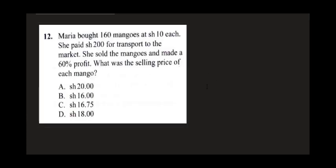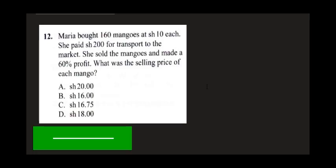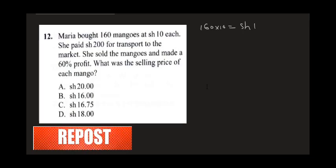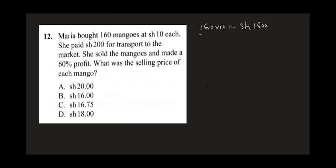Question 12 says: Maria bought 160 mangoes at 10 shillings each. She paid 200 shillings for transport to the market. She sold the mangoes and made a 60% profit. What was the selling price? She bought the mangoes for 160 times 10, which is 1600 shillings. Adding transport of 200 gives a cost price of 1800 shillings.